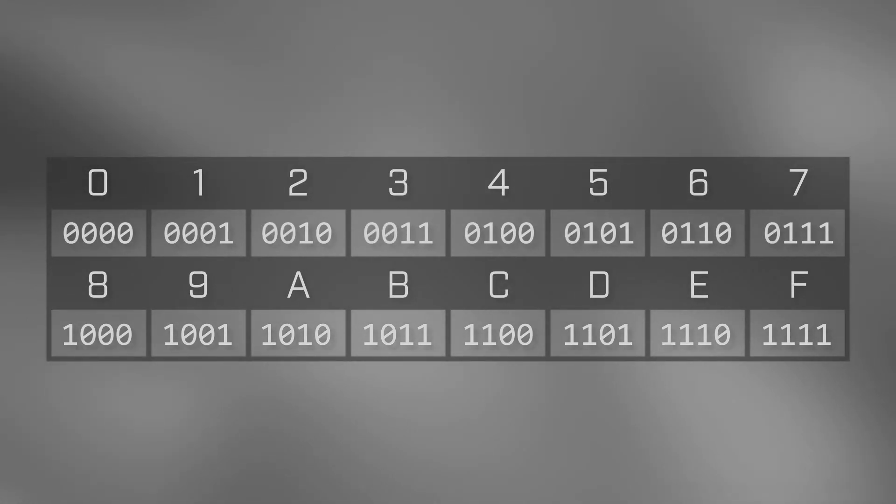For clarity, let's add some leading zeros to each of the binary numbers so that they all have the same number of bits. Each of the digits 0 through F fits nicely into a maximum of 4 bits. And we can use a table like this to quickly convert a hexadecimal number into binary.